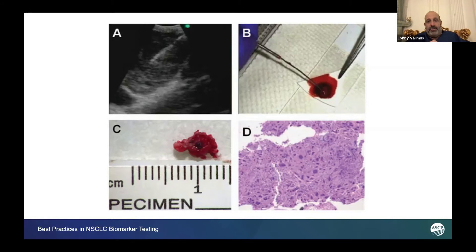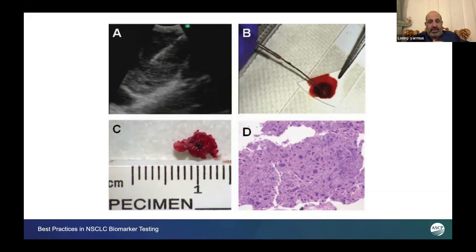The remainder of that sample, as shown in panel B, is pushed out with the stylet onto filter paper. And with a median of five passes, we are able to produce a clot that is shown in section C, which can then be embedded in paraffin and dissected out — as you can see in D — where you end up essentially with almost a histologic specimen.